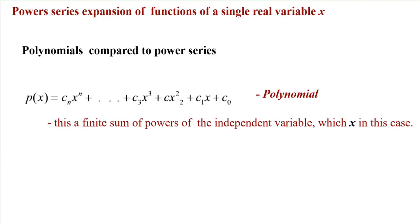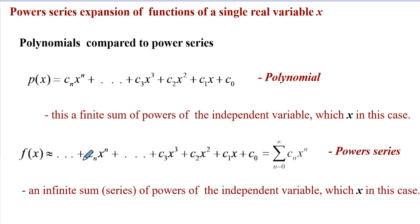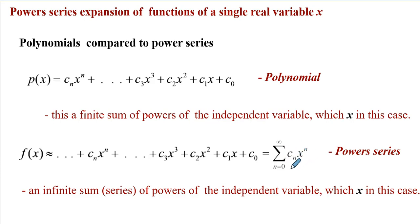Comparing polynomials to series expansion: a polynomial will be a finite sum, whereas a power series expansion is an infinite sum. It is important when you write your power series expansion to indicate these dots to communicate that this is an infinite sum, or represent it in compact form using sigma notation with the index n running from 0 to infinity. Here, n is a whole number.